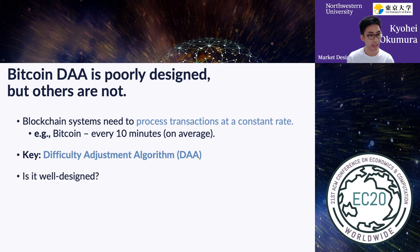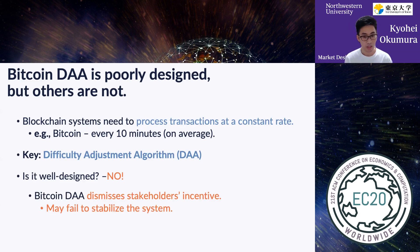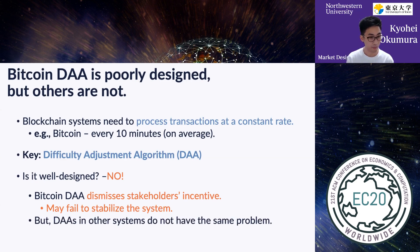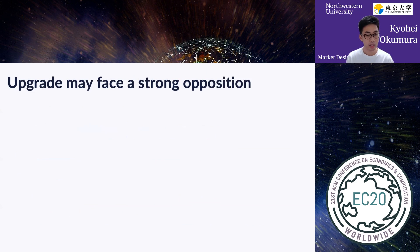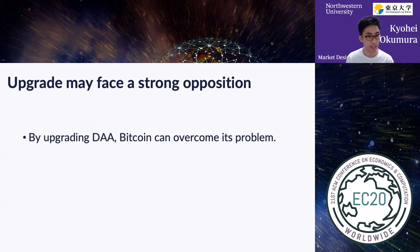One may ask: is it well designed? And the answer is unfortunately no. Our first finding is that Bitcoin's algorithm dismisses stakeholders' incentive, and as a result, it may fail to stabilize the system. But at the same time, we also found that the algorithms used in other blockchain systems do not have the same problem. Because there is already a good alternative, by just upgrading its algorithm, Bitcoin can overcome its problem.